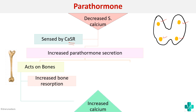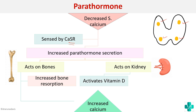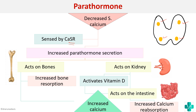Not only bones, PTH will also act on the kidneys so that it can activate vitamin D, and through vitamin D it will also act on the intestines to increase calcium reabsorption. By action on the bones, kidneys, and intestine, it will increase the calcium level to normal.